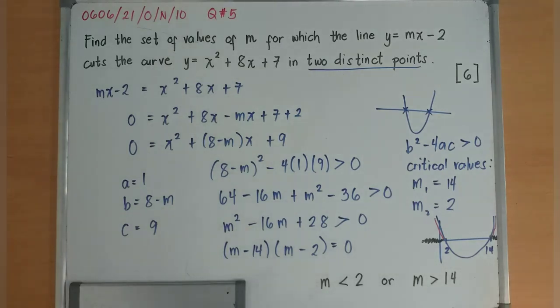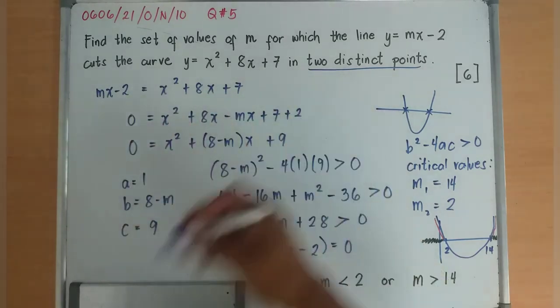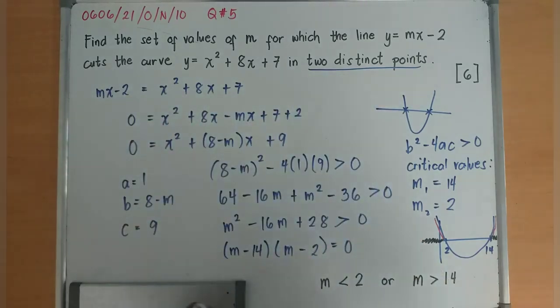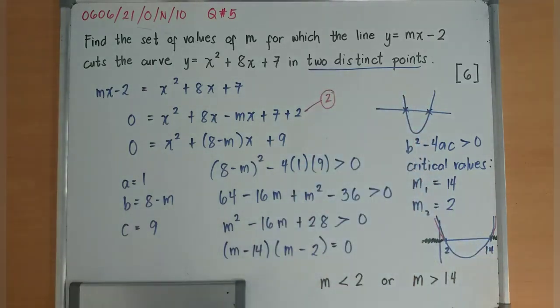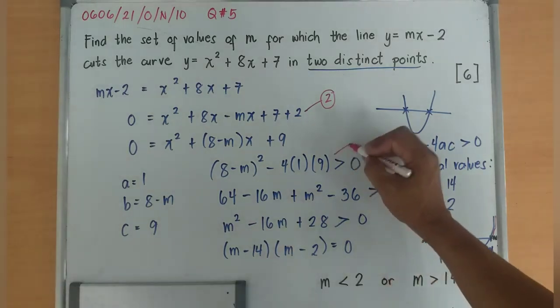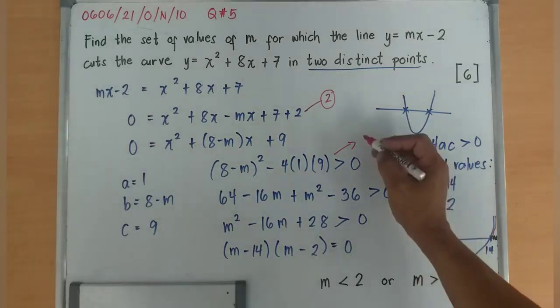So how do you get the 6 marks for this one? You will get 2 marks for this part. You will get 1 mark for having this equation or inequality.